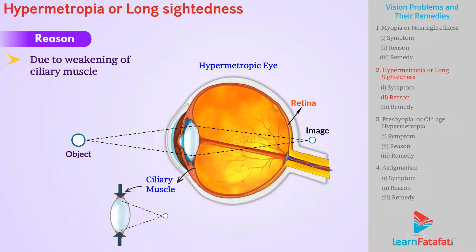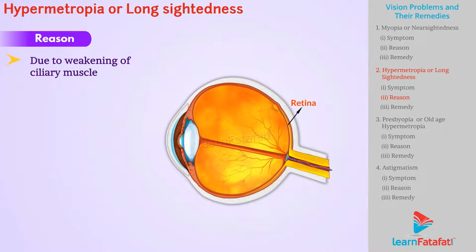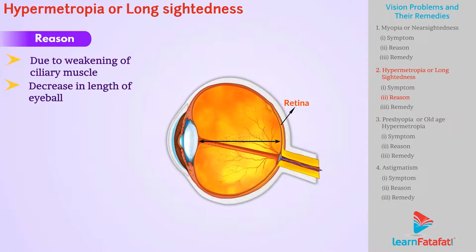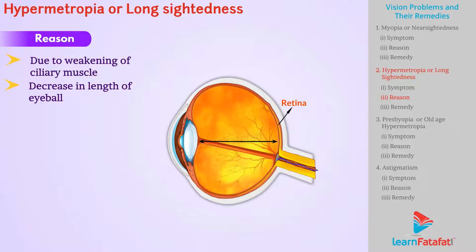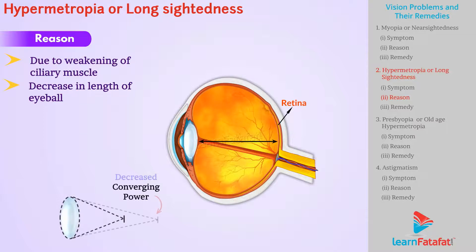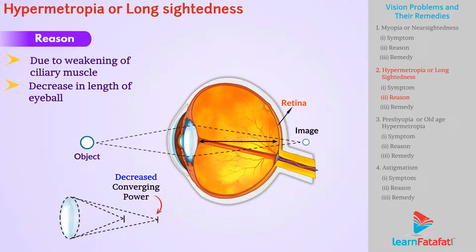The ciliary muscles do not contract sufficiently, and hence the curvature of the lens decreases and focal length increases. Another reason is if there is a decrease in the length of the eyeball, then the distance between the lens and retina decreases. Thus, the converging power of the lens decreases and the image is formed behind the retina.